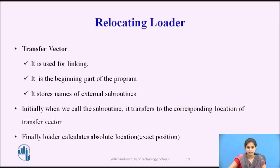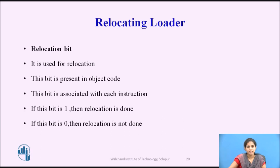The transfer vector is used for linking. It is the beginning part of the program and stores the names of external subroutines. Initially, when a subroutine is called, control transfers to the corresponding location of the transfer vector; the loader then calculates the absolute location. The relocation bit is used for relocation. This bit is present in the object code and is associated with each instruction. If this bit is 1, relocation is done; if it is 0, relocation is not done.